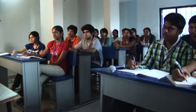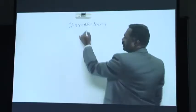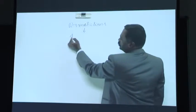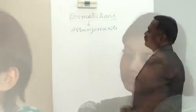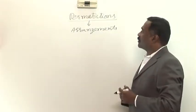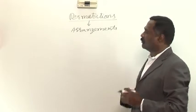Permutation — if you refer to the English dictionary, its meaning is 'arrangements'. Arrangements of things or objects is nothing but a permutation.